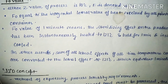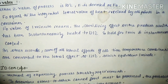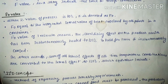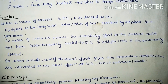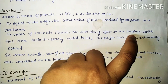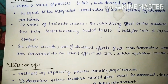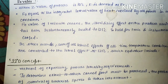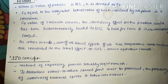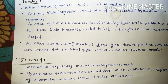F0 value of 1 minute means the sterilizing effect on a pouch which has been instantly heated to 121 degrees Celsius, held for 1 minute, and instantly cooled. In other words, the sum of all lethal effects of all time-temperature combinations are converted to the lethal effect at 121 degrees Celsius, which is equivalent to 1 minute.